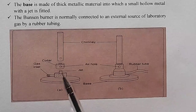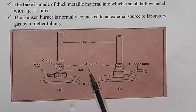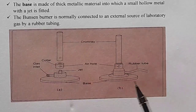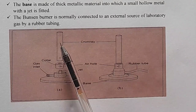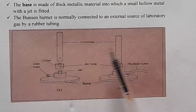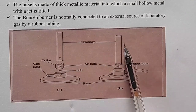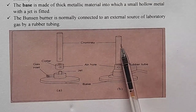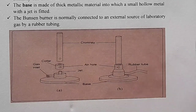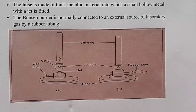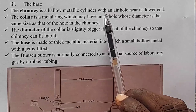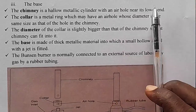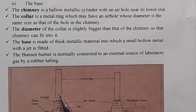We are having two diagrams here. The first one is when it is open and the second is when it is closed. At the top we are having the chimney. The chimney is a hollow metallic cylinder with an air hole near its end — that is the air hole we are talking about.